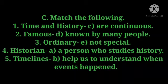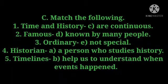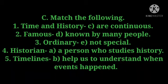Number one: 'time and history' — we have to join with number C, 'are continuous'. Number two: 'famous' — we have to join with number D, 'known by many people'. Question number three: 'ordinary' — we have to join with E, 'not special'. Number four: 'historian' — we have to join with A, 'a person who studies history'.